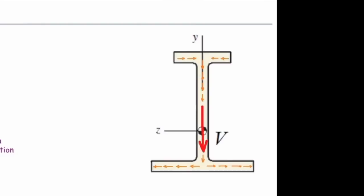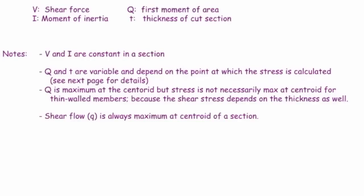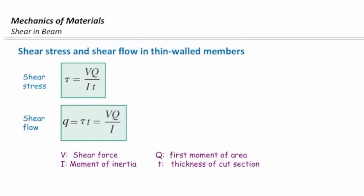That is a big difference between thin-walled shapes and the shapes from the previous lecture. The tricky part is how to calculate Q and how to calculate T. Another important fact: in the previous lecture, I said shear stress is always maximum at the centroid because Q is always maximum at that point. This is not the case for thin-walled elements. With VQ over IT, since T might be large at the centroid, that reduces the shear stress value there. So I need to find the point with the highest Q over T ratio.